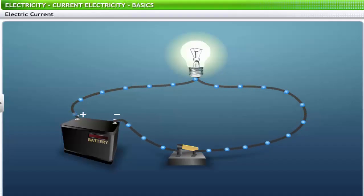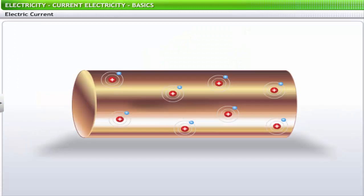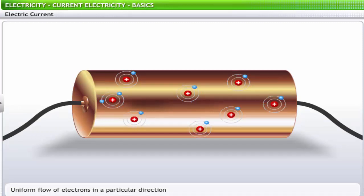Before learning about the cause and applications of electric current, let us examine the features of electric current. Typically, in a conductor, free electrons move randomly. When these electrons are influenced to move uniformly in a specific direction, we get electricity, or electric current.